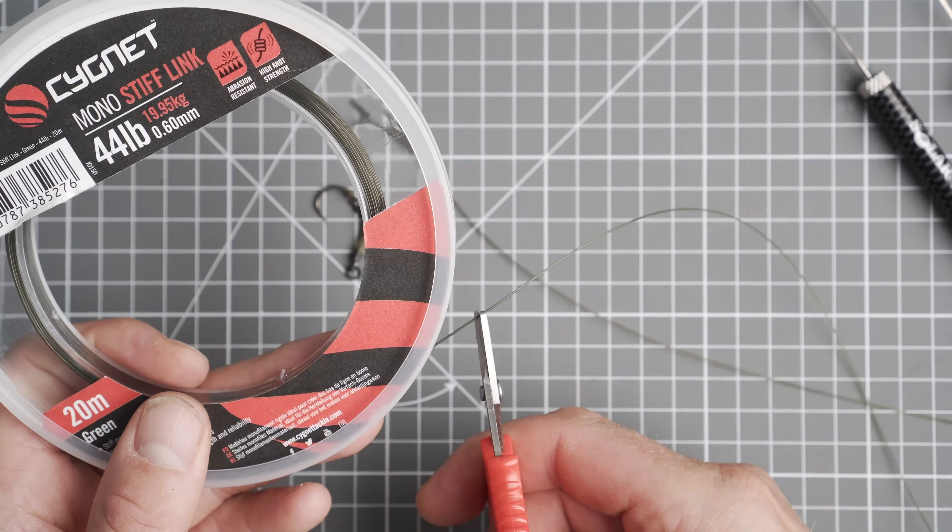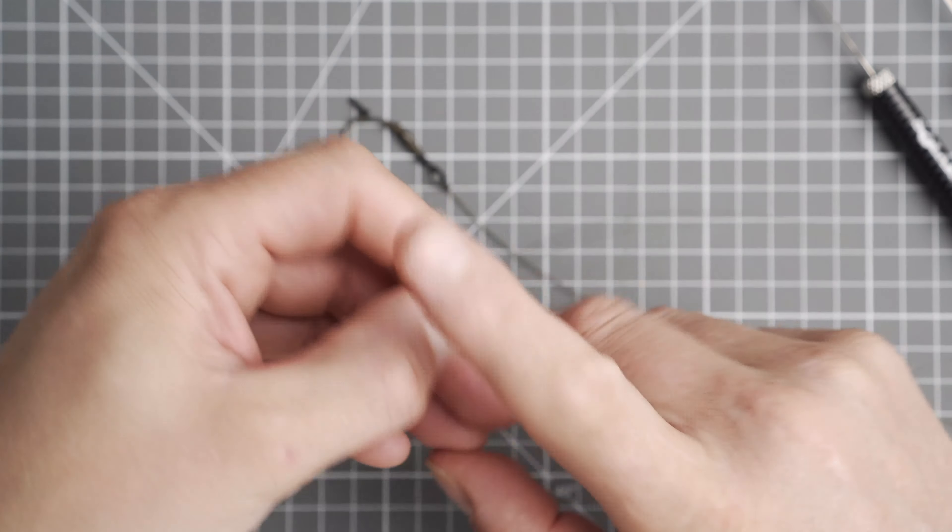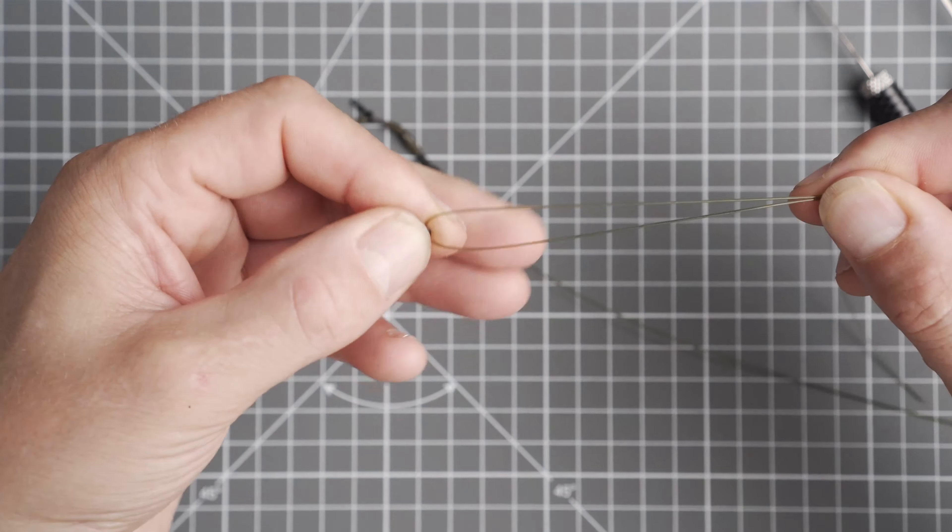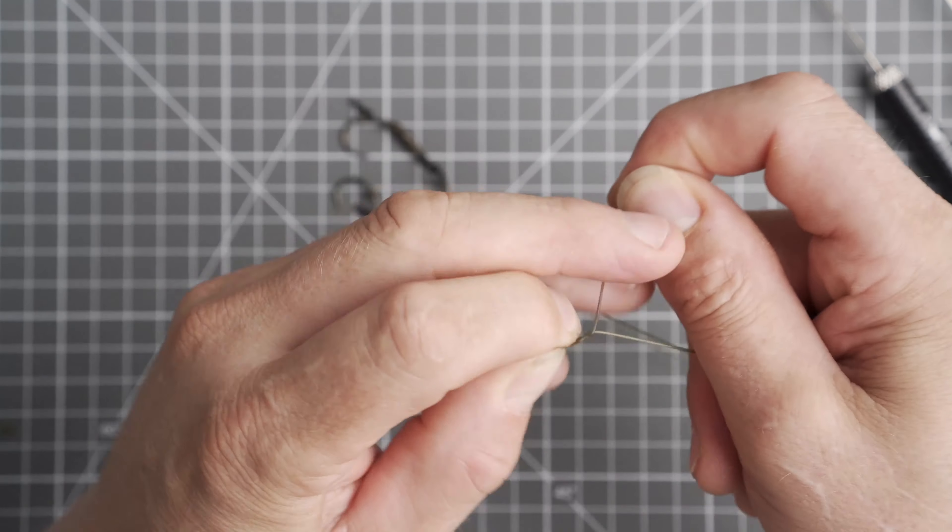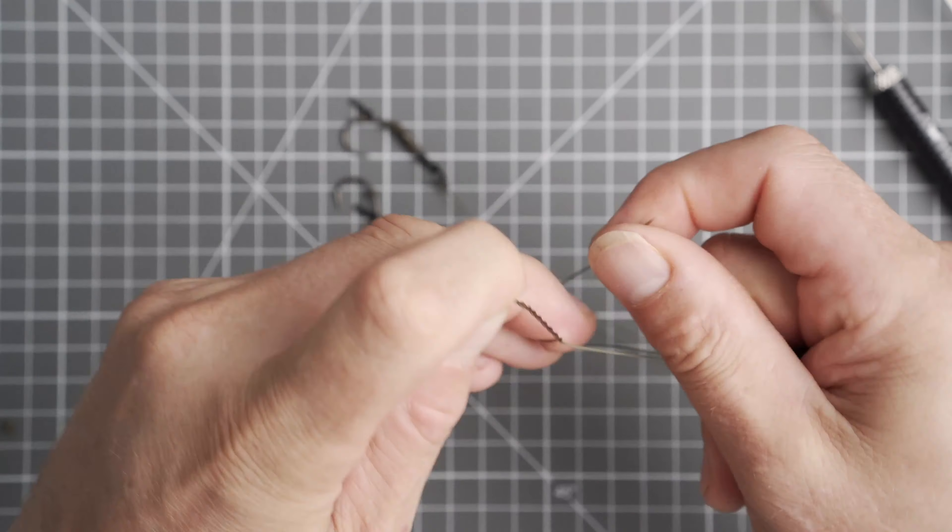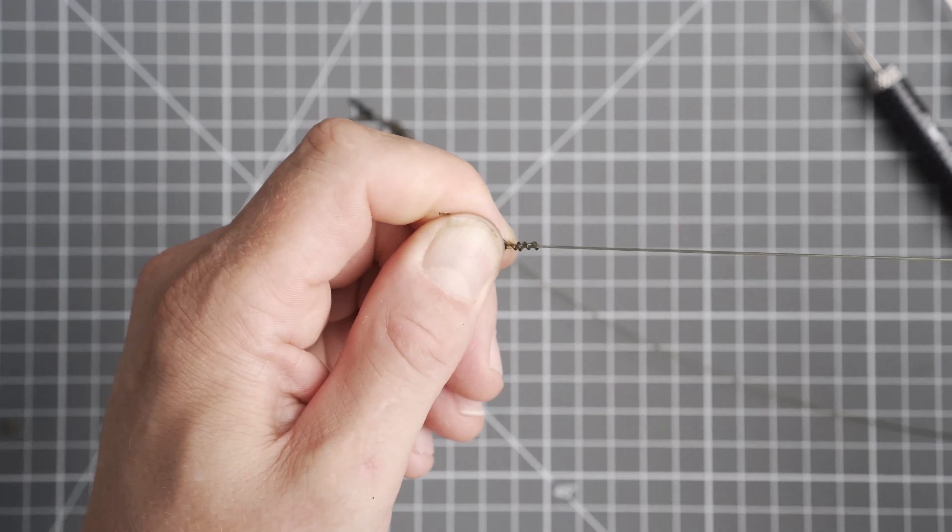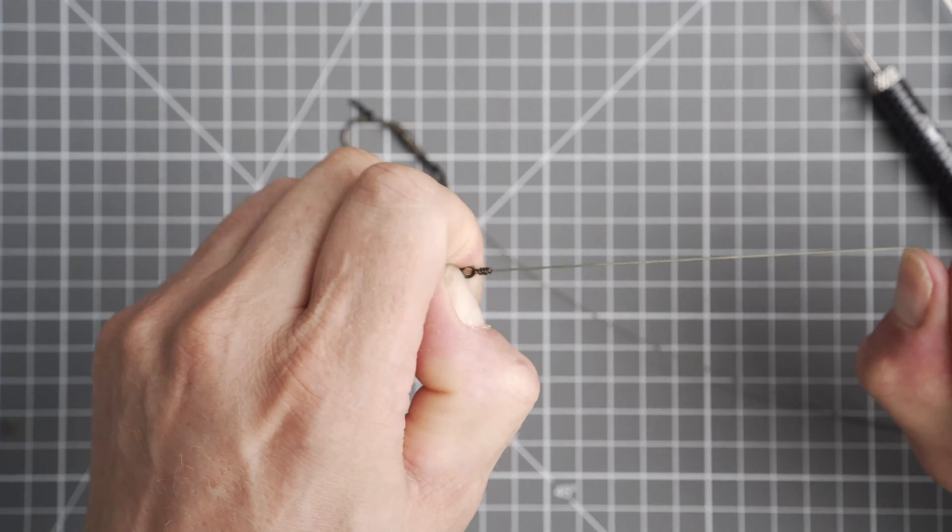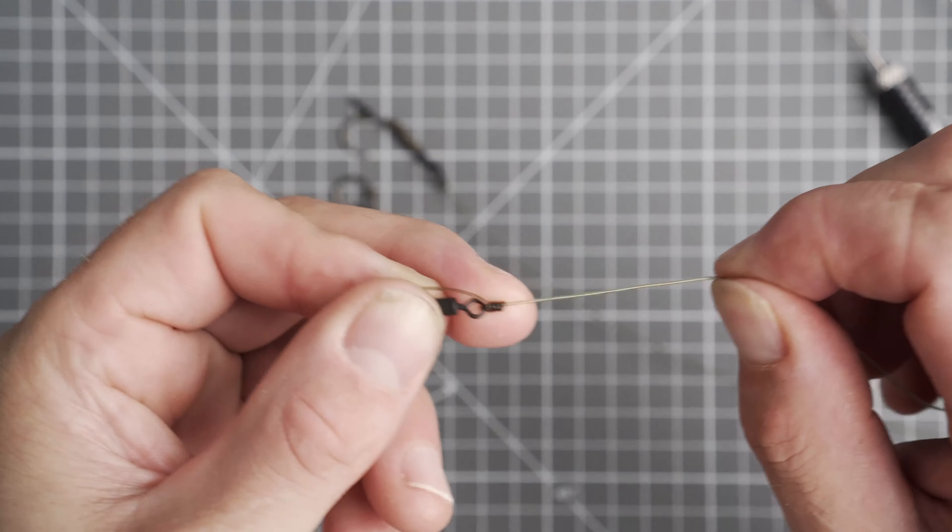So I'm going to cut off at least 12 inches of the stiff mono. I'm going to tie a simple four turn blood knot. Trim the excess little tag end with a sharp pair of scissors.